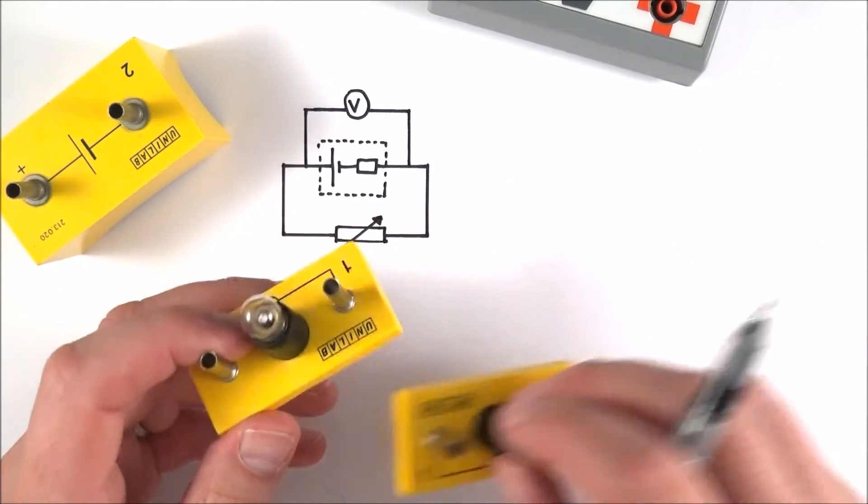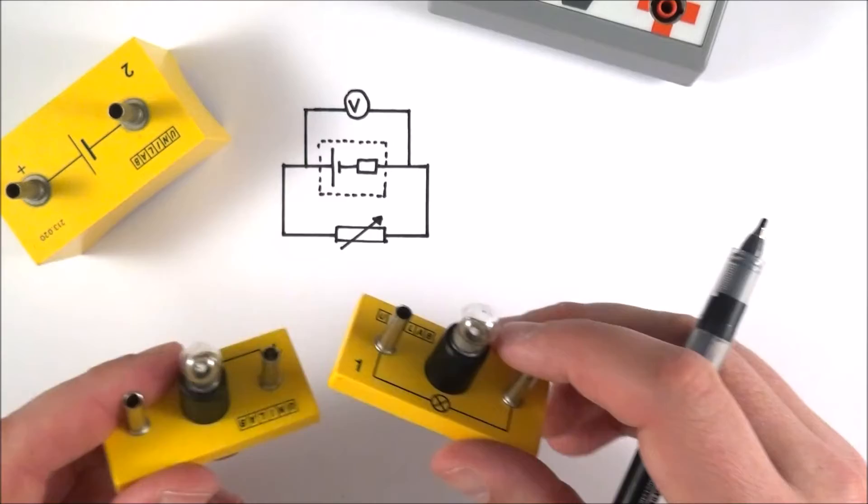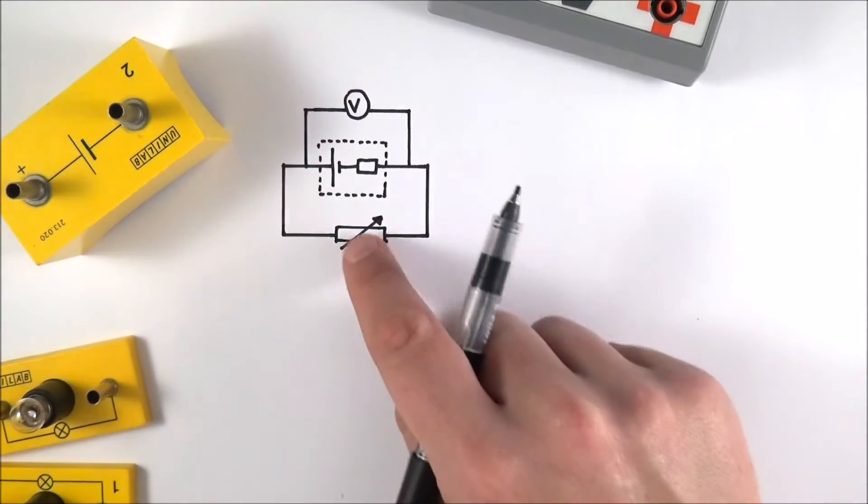You might have one, two, three, four, five lamps, and effectively this is then acting as the external load of that circuit.